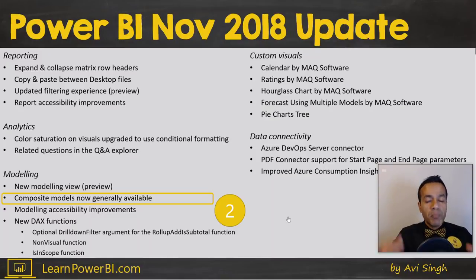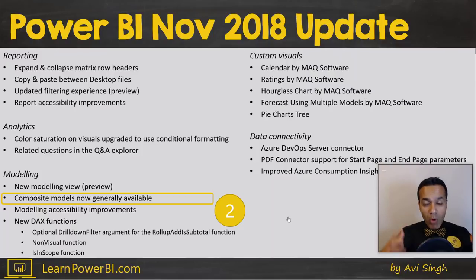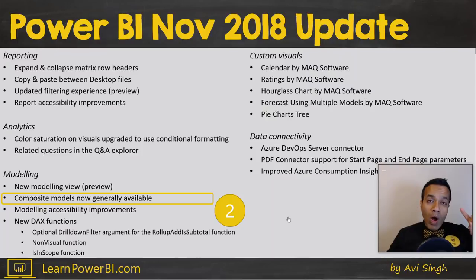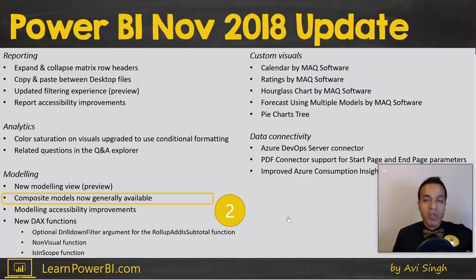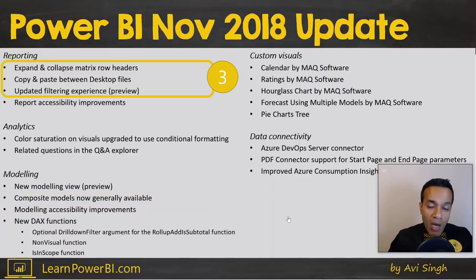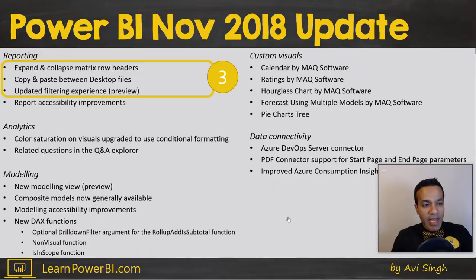Feature number two is about one of the biggest changes ever delivered in Power BI: composite models, which is now generally available. I'm going to link to the video where I've covered composite models in detail — once you're done with this video, you can click the link up here or in the description.